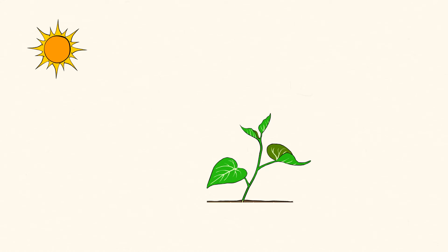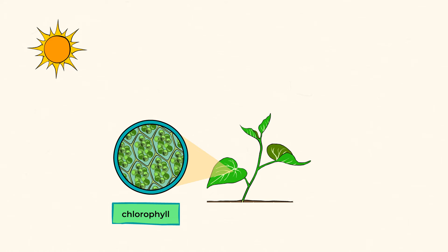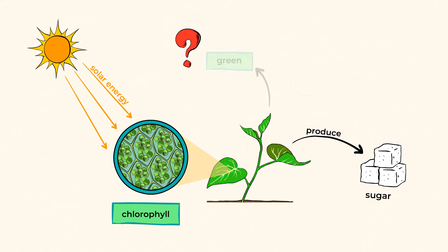They absorb sunlight thanks to a material called chlorophyll. This chlorophyll helps them take in energy from the sun, called solar energy, and use it to produce sugar. If you ever wondered why plants are green, green chlorophyll is the answer.